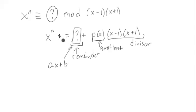Now, let's try to plug in 1 for x into this whole equation. Notice that this whole part vanishes, goes away. And we're left with 1 to the n is equal to, with x being 1, a plus b. Or 1 is equal to a plus b.